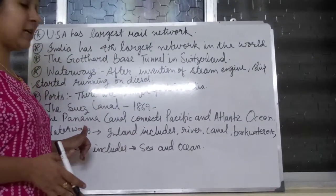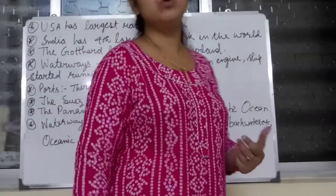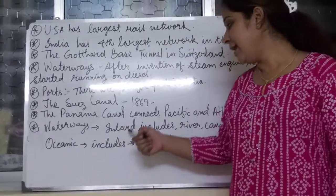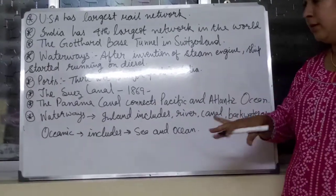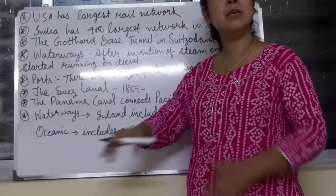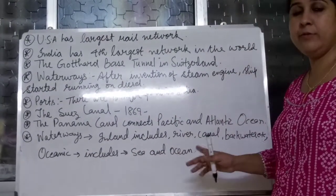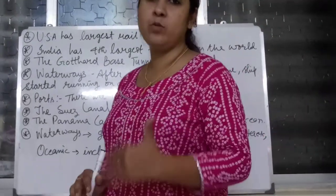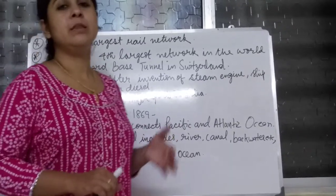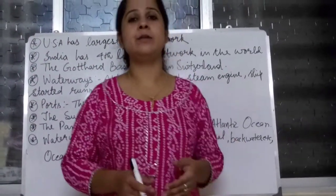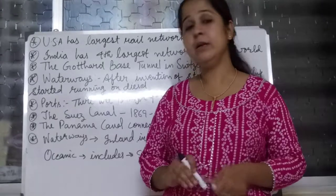Waterways are again of two types: first is inland waterways and second is oceanic waterways. Inland waterways include rivers, canals, and backwaters — these are within the land. Oceanic waterways means at a large mass of water — it includes seas and oceans. Waterways are equally very important like roadways and airways.